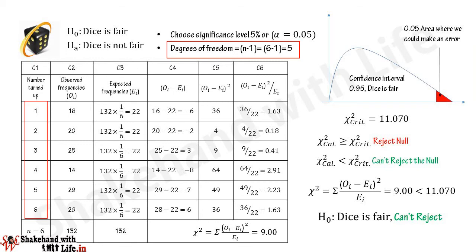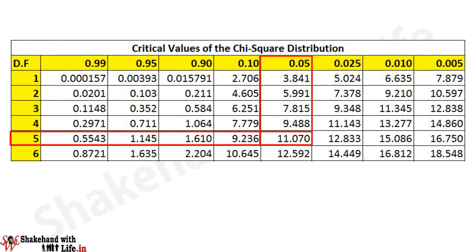Here we have 6 numbers on the dice — 1, 2, 3, 4, 5, and 6 — that means n equals 6. We have freedom to choose only the first 5 numbers in any way when we roll the dice, and for the 6th one we have no choice. Hence the degrees of freedom is n minus 1 equal to 5. Now refer to the chi-square distribution table and mark the value under 0.05 and in the row of 5 degrees of freedom, which gives us 11.070.